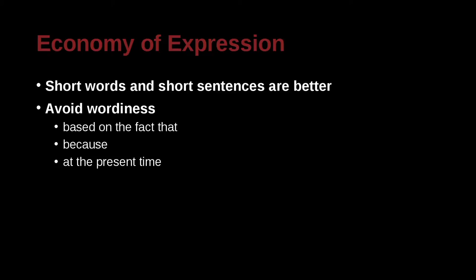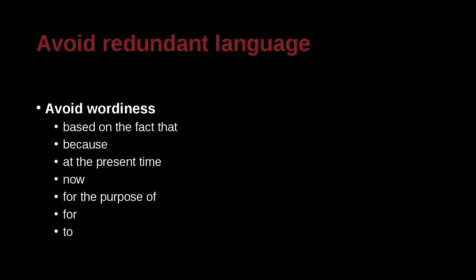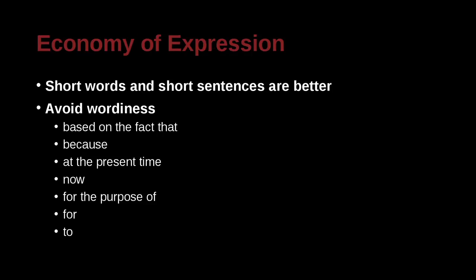At the present time — why write that when we already know what you're talking about is the present time? You're just wasting space. 'Now' has the same idea. 'For the purpose of' — you don't need to explain that; just write what you're trying to tell me. You can replace it with simply 'for' or 'to.' These are all words that waste space and do not have good economy of expression. Try to cut them whenever you see them.